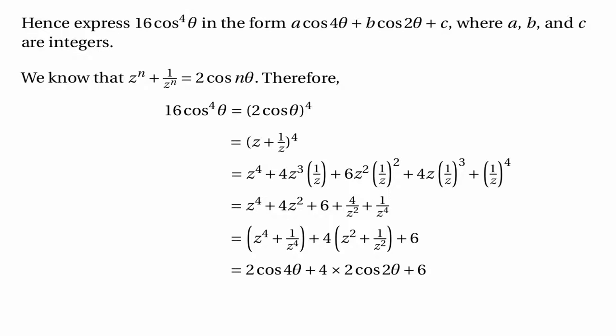So we've got 2 cos 4θ plus 4 lots of 2 cos 2θ plus 6, which is 2 cos 4θ plus 8 cos 2θ plus 6. This is 16 cos⁴θ expressed in the required form.